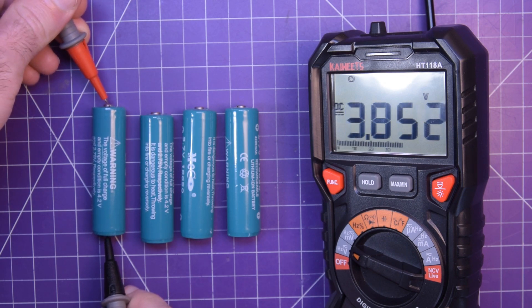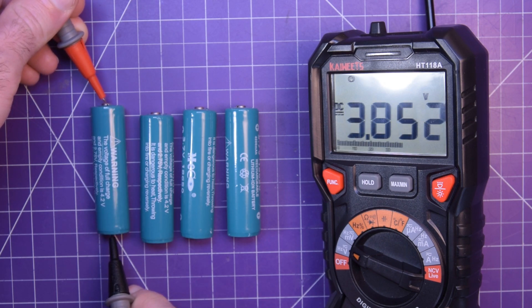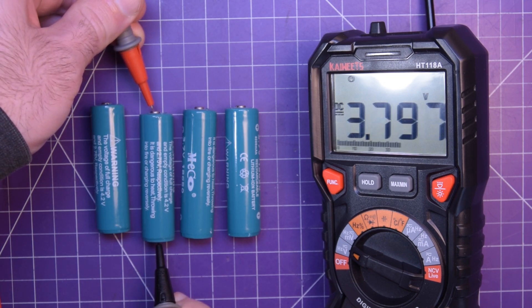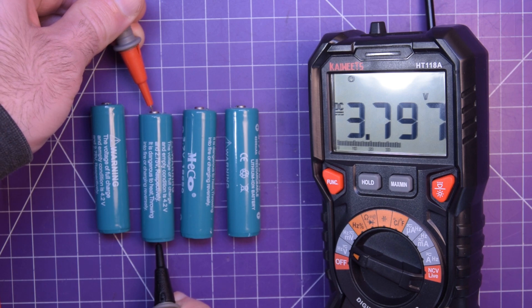But these ones are protected, so when the battery goes low, this one's 3.8 volts, the protection kicks in and cuts off the cell completely. 3.79, 3.75, and 0.